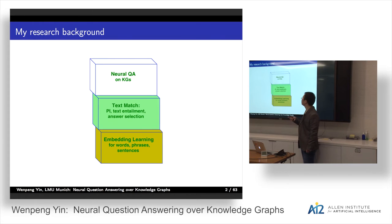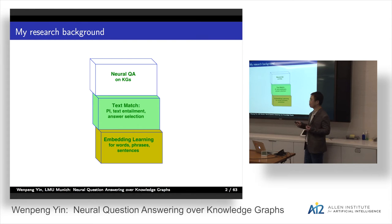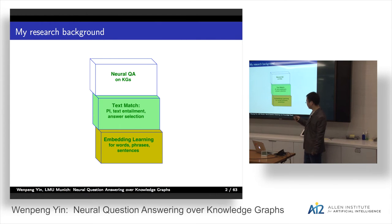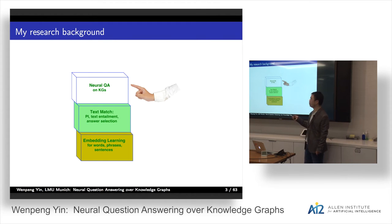First, I'll introduce my research background in my PhD. In the beginning, I did some embedding learning for words, phrases, and sentences. Then I focused on text matching, like paraphrase identification, textual entailment, and answer selection for multiple choice questions. And recently, I'm interested in neural question answering over knowledge graphs, and that's also the topic today. Of course, if you have any questions for any of the parts, feel free to ask me, or we can discuss offline.